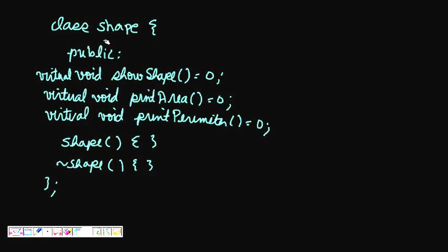We have a class Shape and we have some virtual method functions: virtual void showShape, then virtual void printArea, virtual void printPerimeter. These are all pure virtual functions which the derived class have to make.